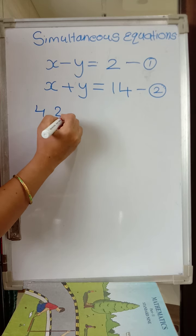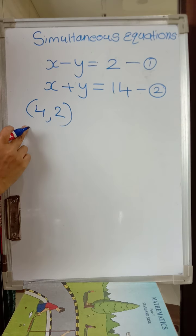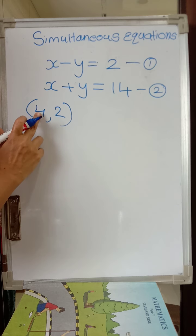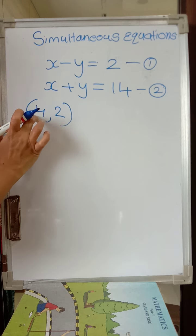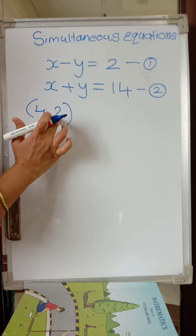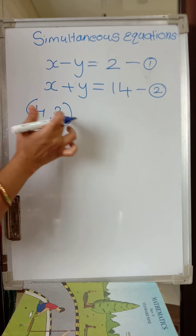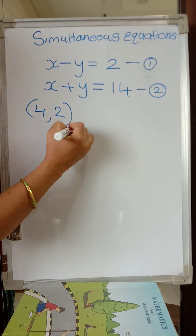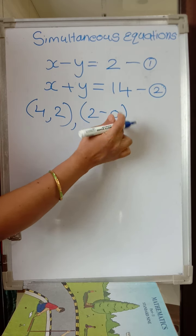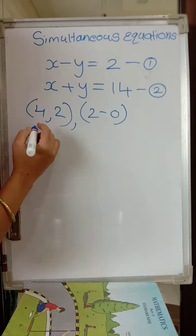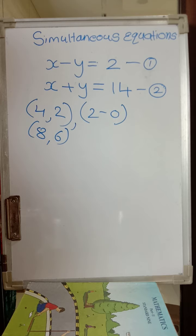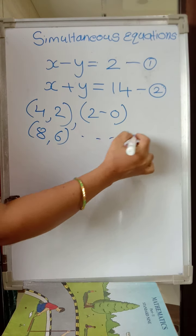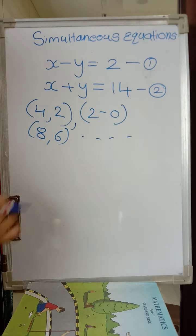When we write in brackets, always write first the x variable, then the y variable. If I write 4 comma 2, that means x is 4 and y is 2, so 4 minus 2 gives you 2. Also I can have 2 comma 0, that also gives answer 2. Again I can have 8 comma 6 — subtraction is again 2. So like this, n number of solutions I can have for this equation.